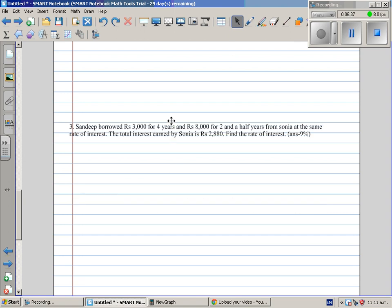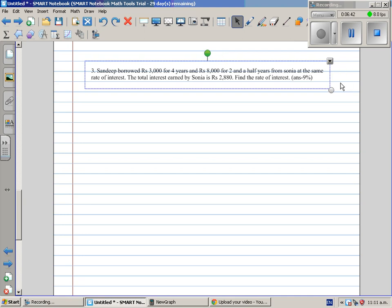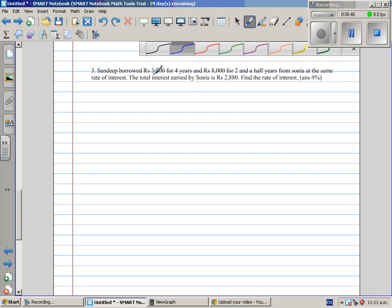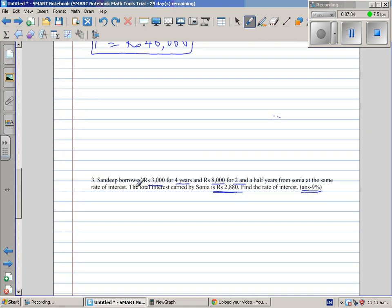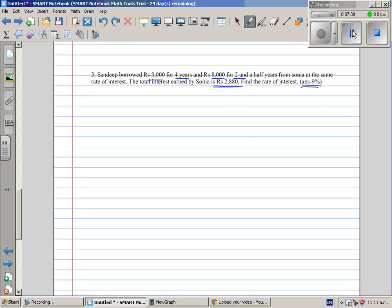Okay, there's one more problem. I want you to look at this problem. Read this problem. The answer is also given. I will come back. So I'll read this problem for you. Sandeep borrowed 3,000 rupees for four years and 8,000 for two and a half years from Sonia at the same rate. If the total interest is 2,880, what's the rate? The answer is 9%. So it would be good practice for you to do this, and then I'll come back and do it for you if you can't do it.